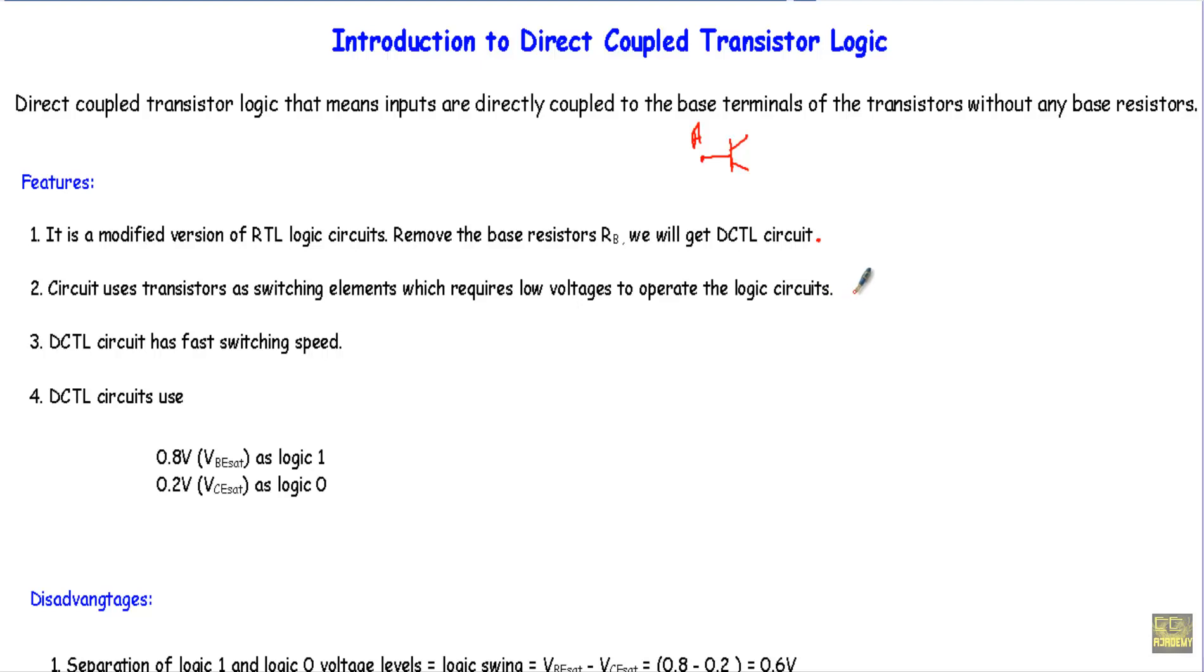Therefore, our DCTL circuit will draw minimum power from our power source. Third, DCTL circuit has fast switching speed. As we are removing the resistor from our circuit, it can switch back and forth from off state to on state or on state to off state more quickly.